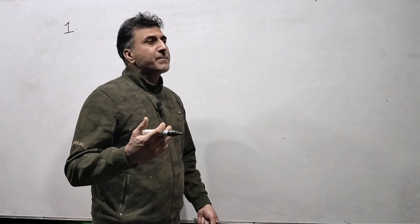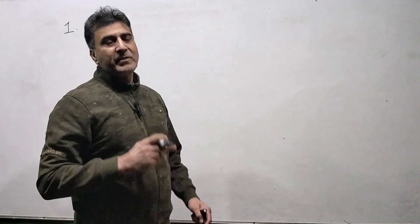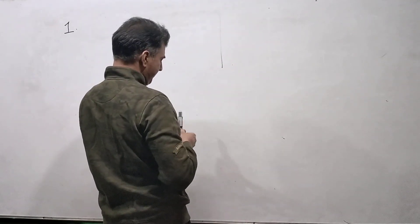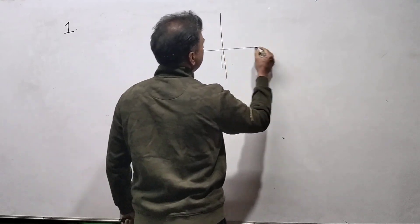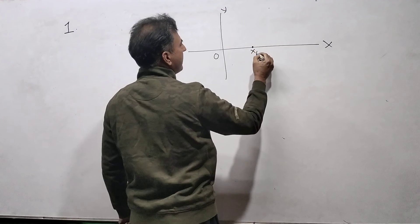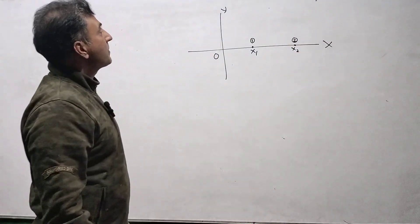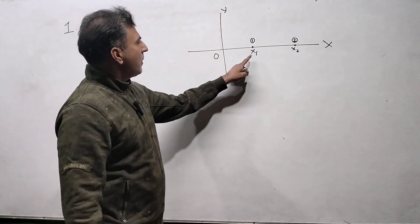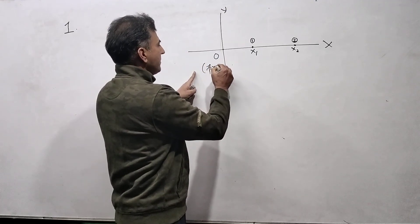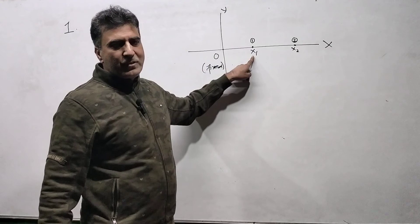Now let me find out the expressions for relative velocity — what is the velocity of object 2 with respect to object 1? For that, I want to develop the equations. Let me take a coordinate system, with an x-axis, y-axis, and origin. Here is a particle at position x1, and here is a particle at position x2 — particle number 1 and particle number 2. If I ask what is the velocity of this particle with respect to the origin, the origin is fixed. The answer is the differentiation of its position: dx1/dt.